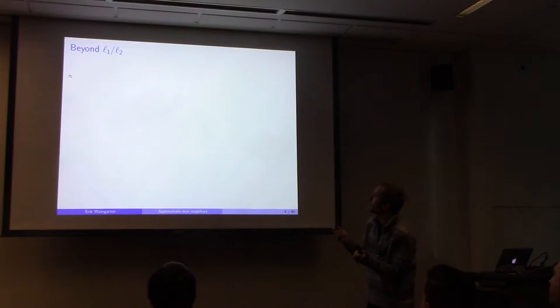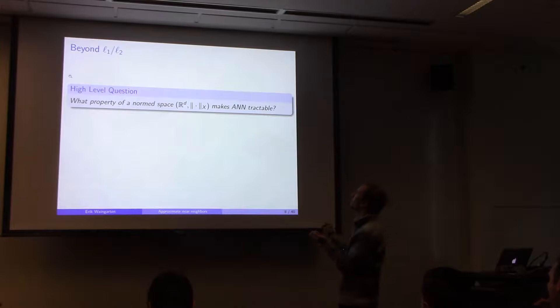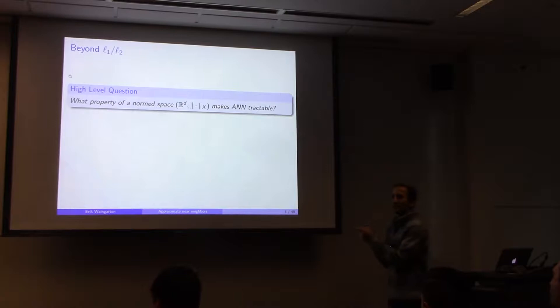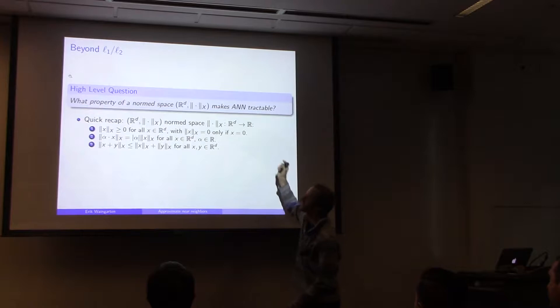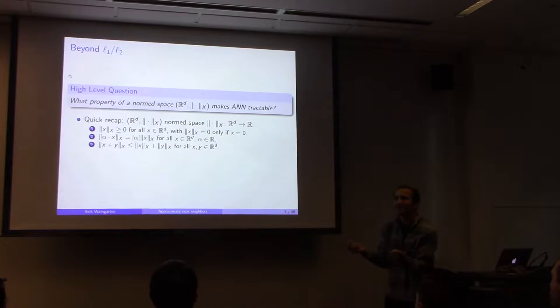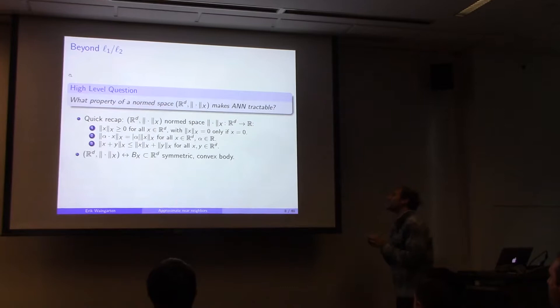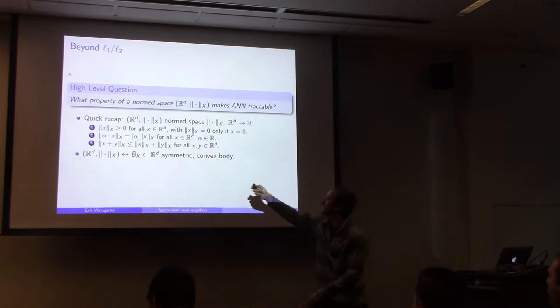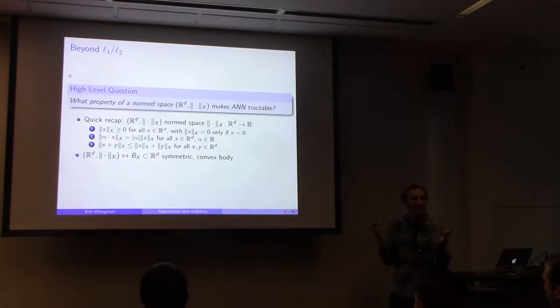This work is really about going beyond L1 and L2. The high-level question is: given any norm space over R^d, what property of that norm space allows us to build data structures for approximate nearest neighbors? A quick recap: a norm space just needs a distance function measuring distance from zero for any vector, satisfying the axioms of a norm. The distance between two points is the norm of their difference.